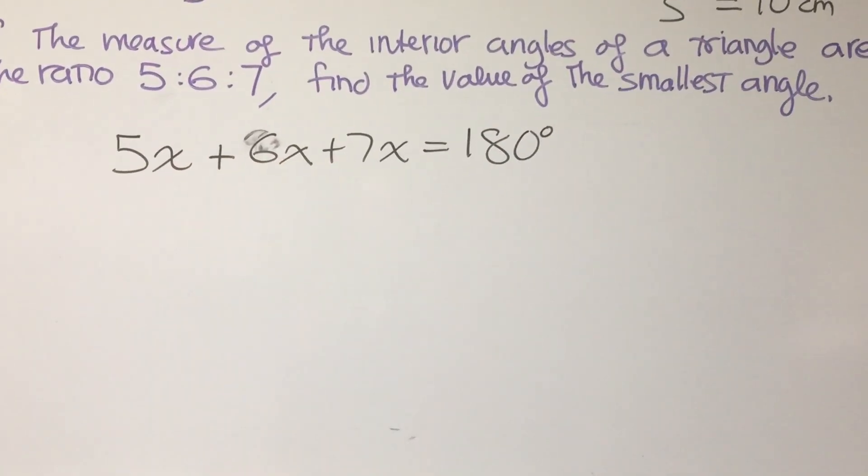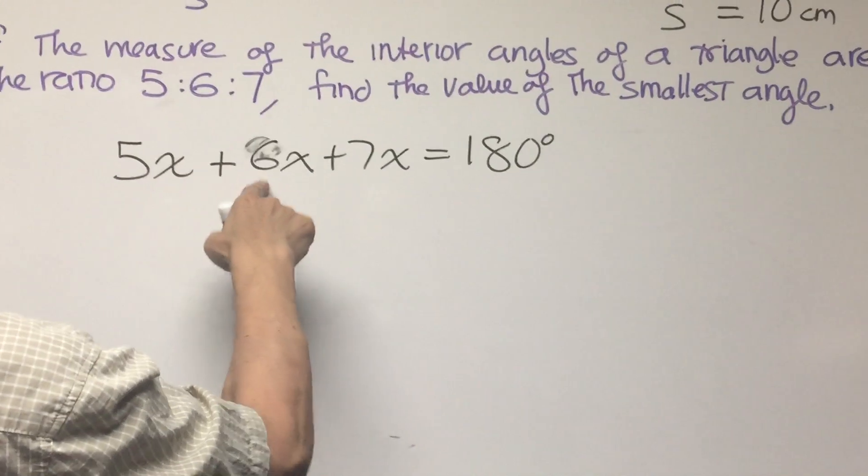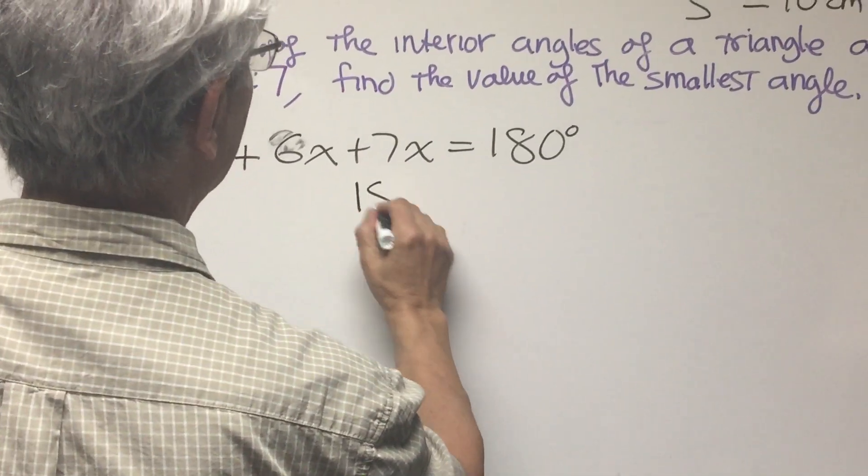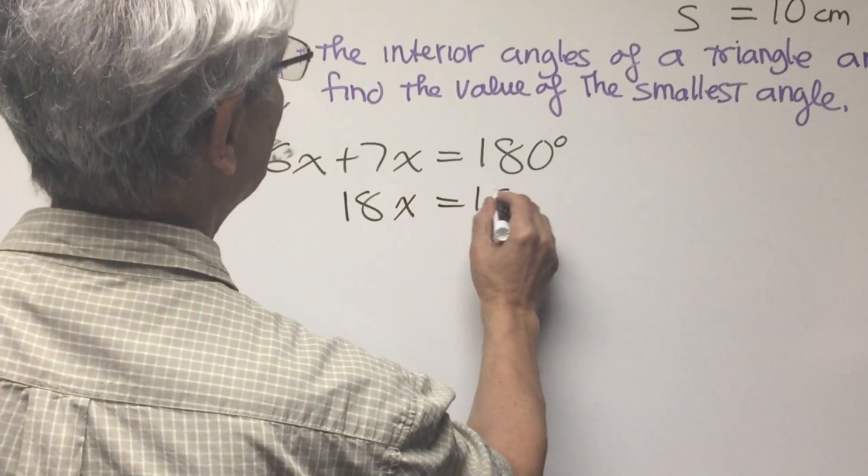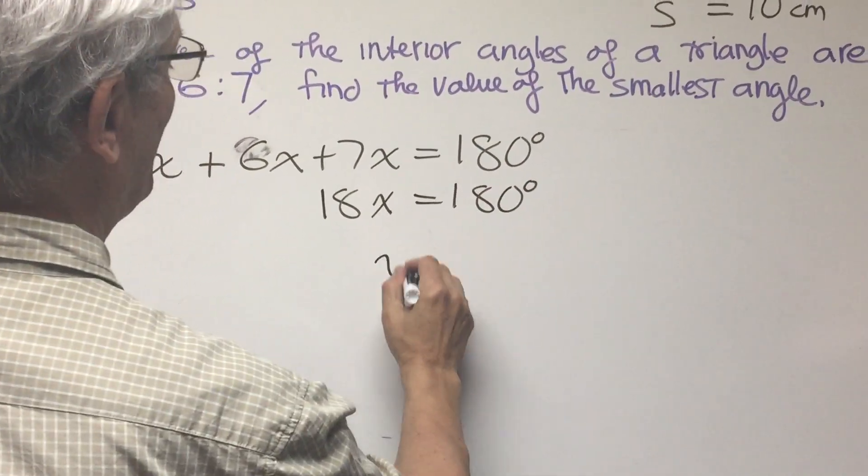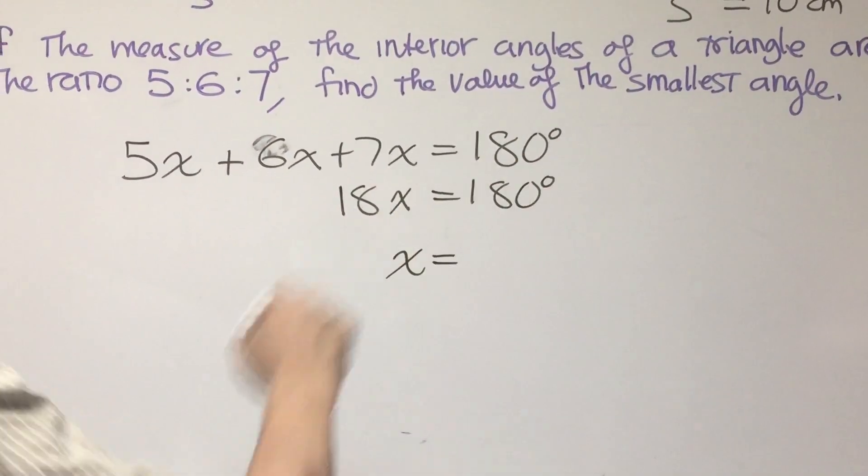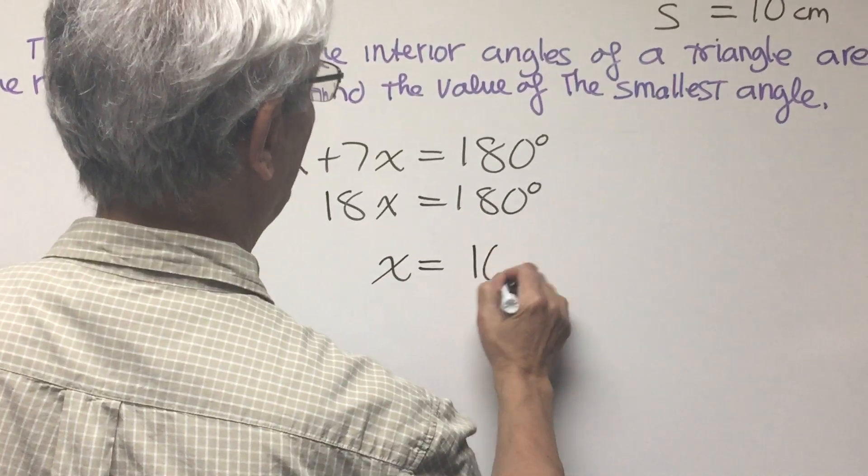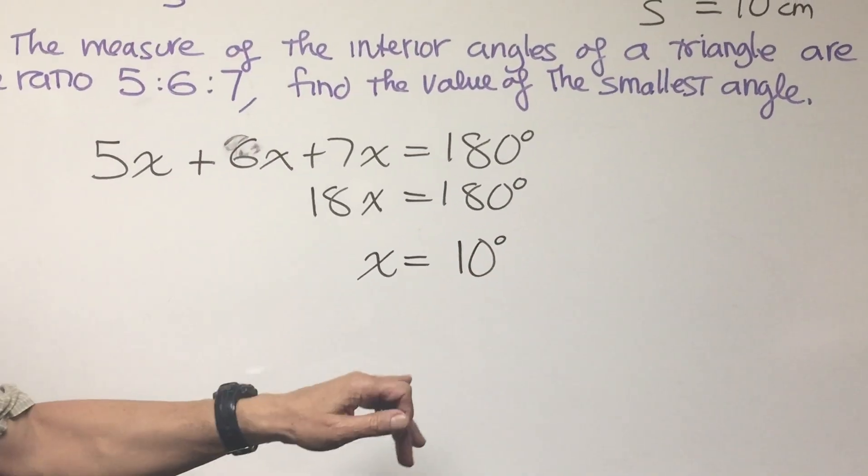So let's solve this equation here: 5x plus 6x is 11x, 11x plus 7x is 18x. Very convenient. 18x is 180 degrees. Therefore, I can see, you can see without doing anything elaborate, that x is equal to 10 degrees.